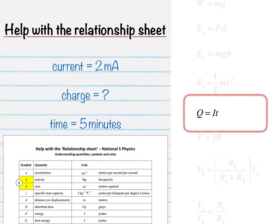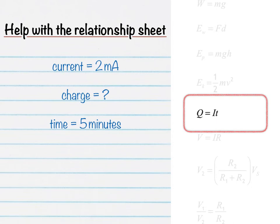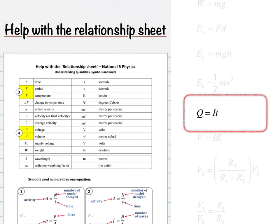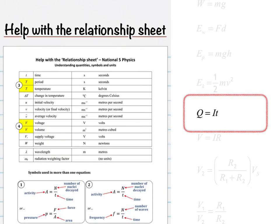Maybe use it when you're trying past paper questions or even homeworks. You can see that some letters are used more than once, like capital A here, which is either activity or area. To clear things up, just look at the bottom of the back page and you'll see the equations where these quantities are used, so no more confusion.